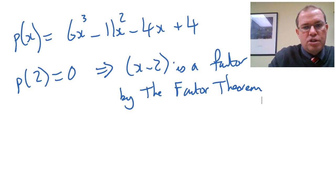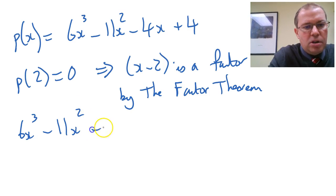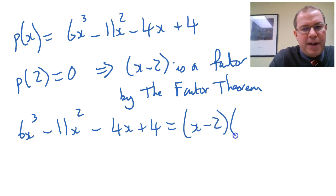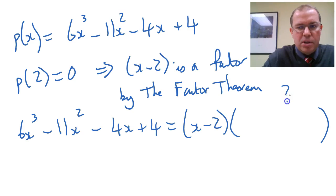The idea behind equating coefficients is basically you're treating it as an identity. You've got your polynomial, 6x cubed minus 11x squared minus 4x plus 4, and you're saying that's equal to, we know x minus 2 is a factor, so we know it goes into another polynomial, and we want to find out what this polynomial is.